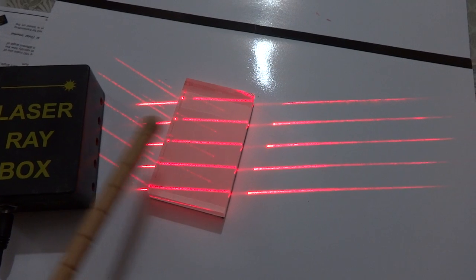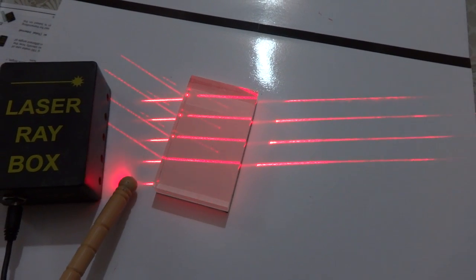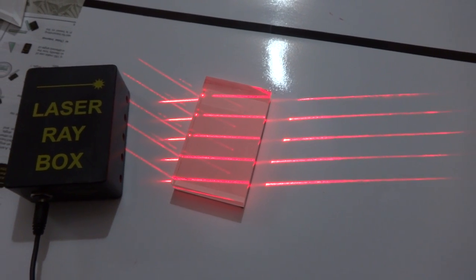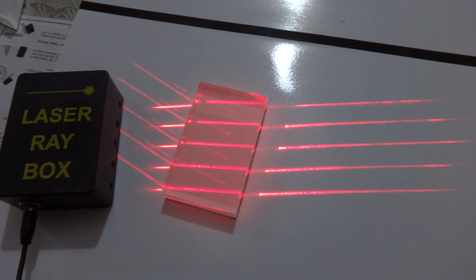So, when the rays are coming from a rarer medium to a denser medium, the rays will be coming closer to the normal.